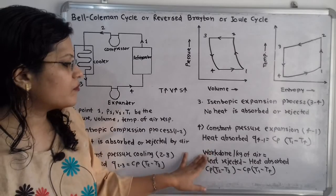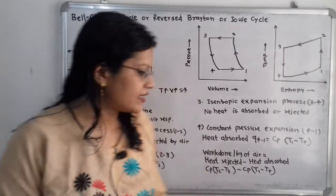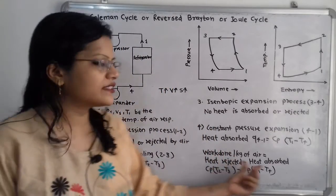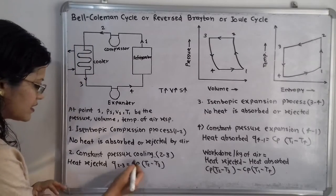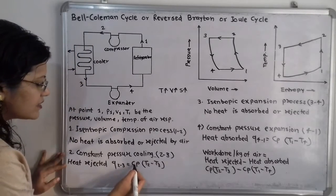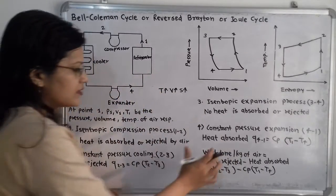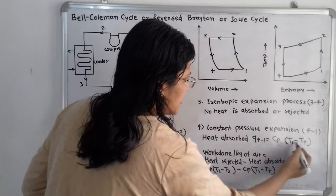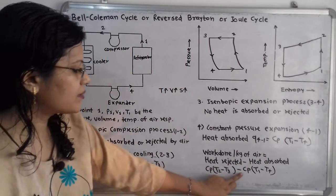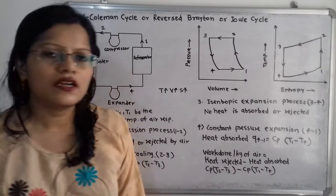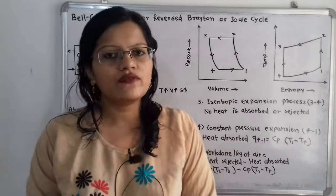Now we move to the work done per kilogram of air. Work done equals heat rejected minus heat absorbed. Heat rejected is Cp(T2 − T3) and heat absorbed is Cp(T1 − T4). So work done = Cp(T2 − T3) − Cp(T1 − T4). This is the formula for work done per kilogram of air.